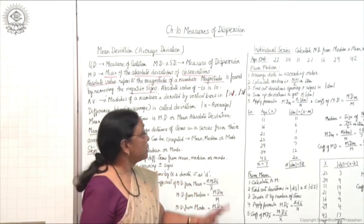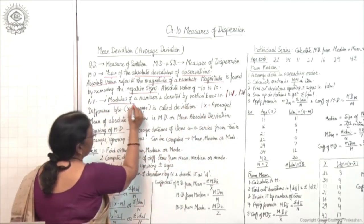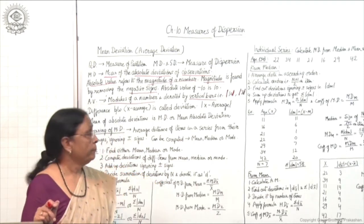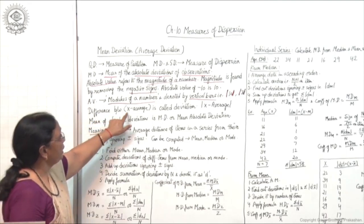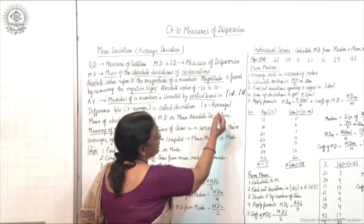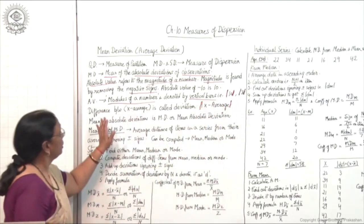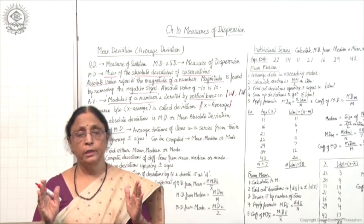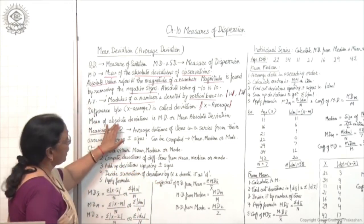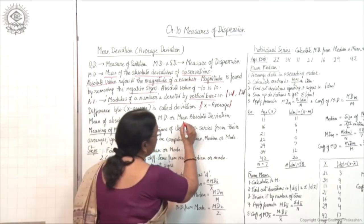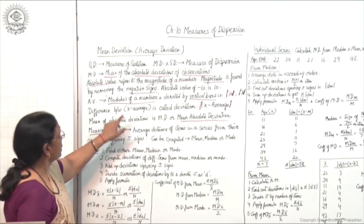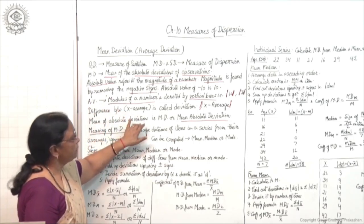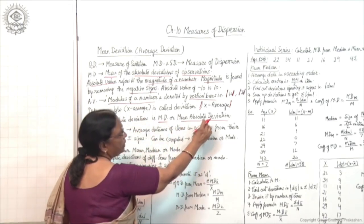This is one of the main features of mean deviation: modulus of a number is taken, denoted by vertical bars, ignoring plus and minus signs. The difference x minus average is called deviation. So x minus x-bar, shown with two vertical bars on both sides (modulus), gives the absolute deviation. Mean of absolute deviations is mean deviation, also known as mean absolute deviation.